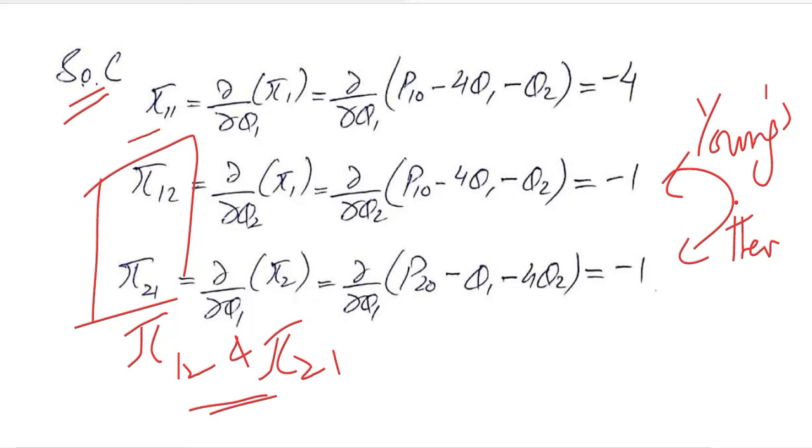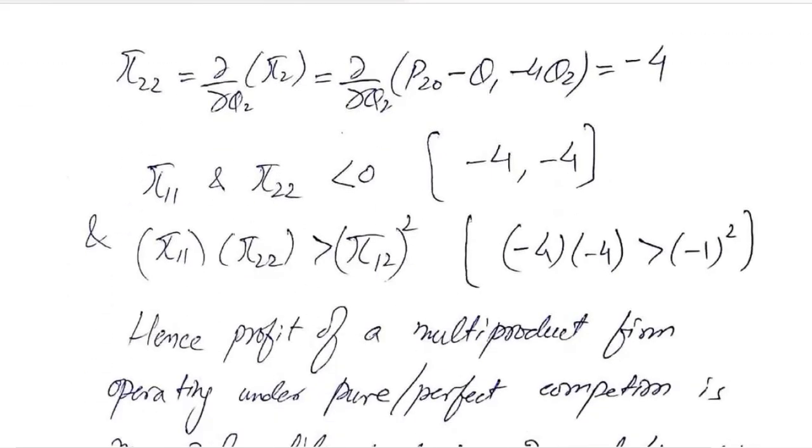So π₁₁ is there. π₁₁, once we found it, that is the derivative of the π₁ function with respect to Q₁. This is the derivative of π₁ function with respect to Q₂. This is the derivative of π₂ with respect to Q₁. It will give us certain values that we have noted here. And π₂₂, the derivative of π₂ with respect to Q₂, is equal to minus 4.